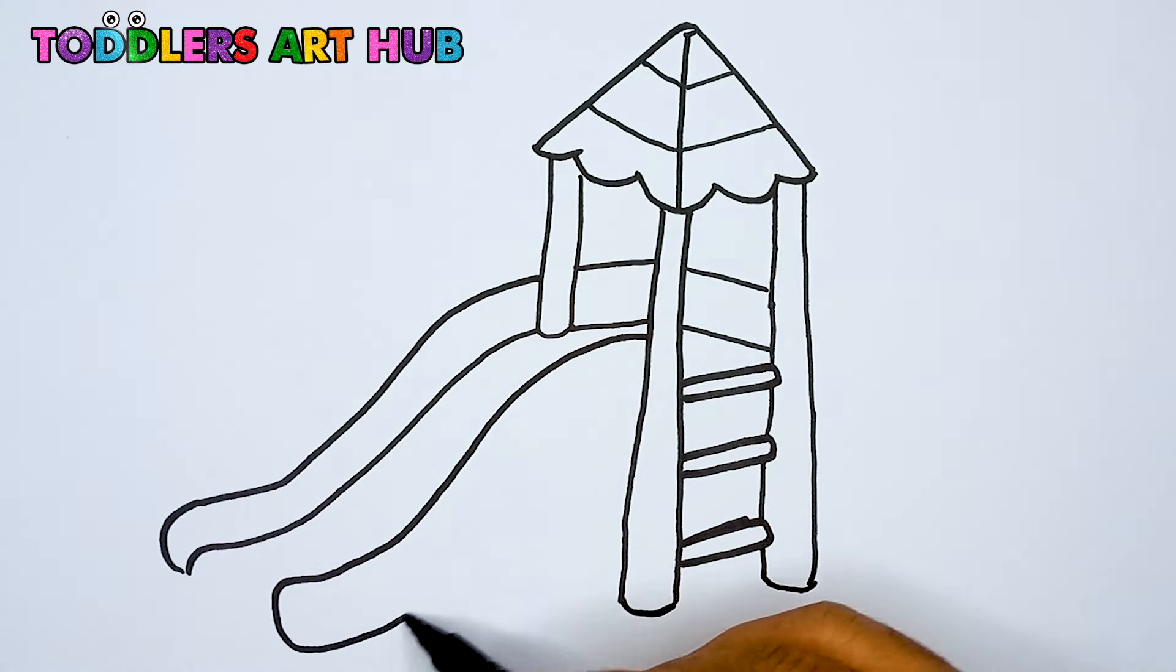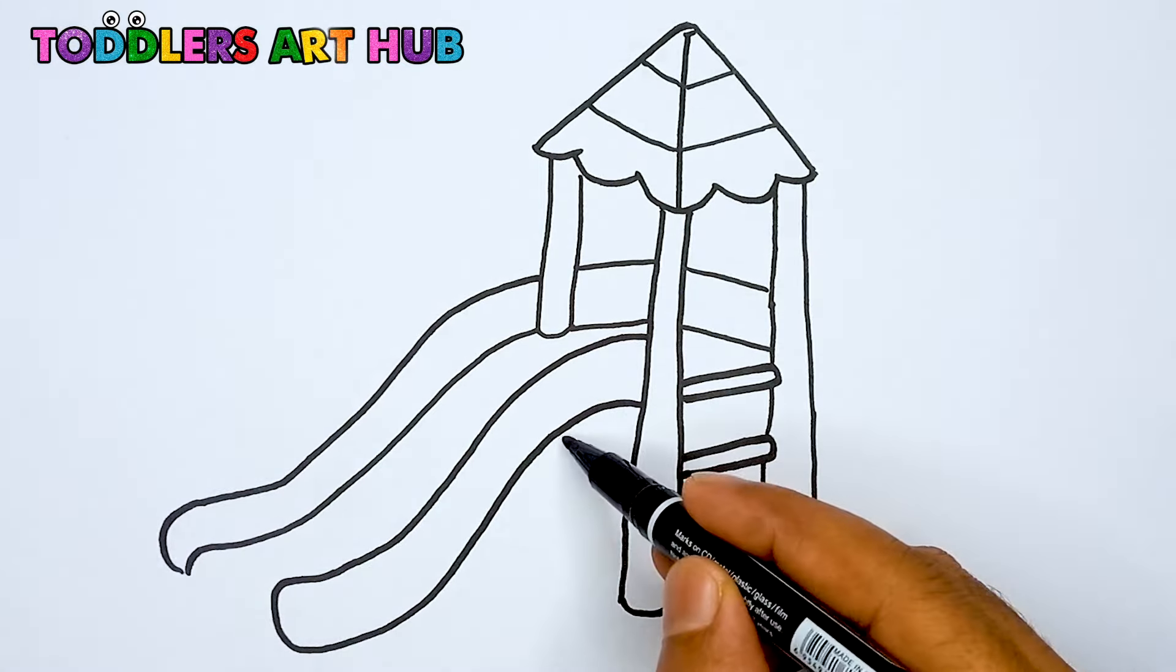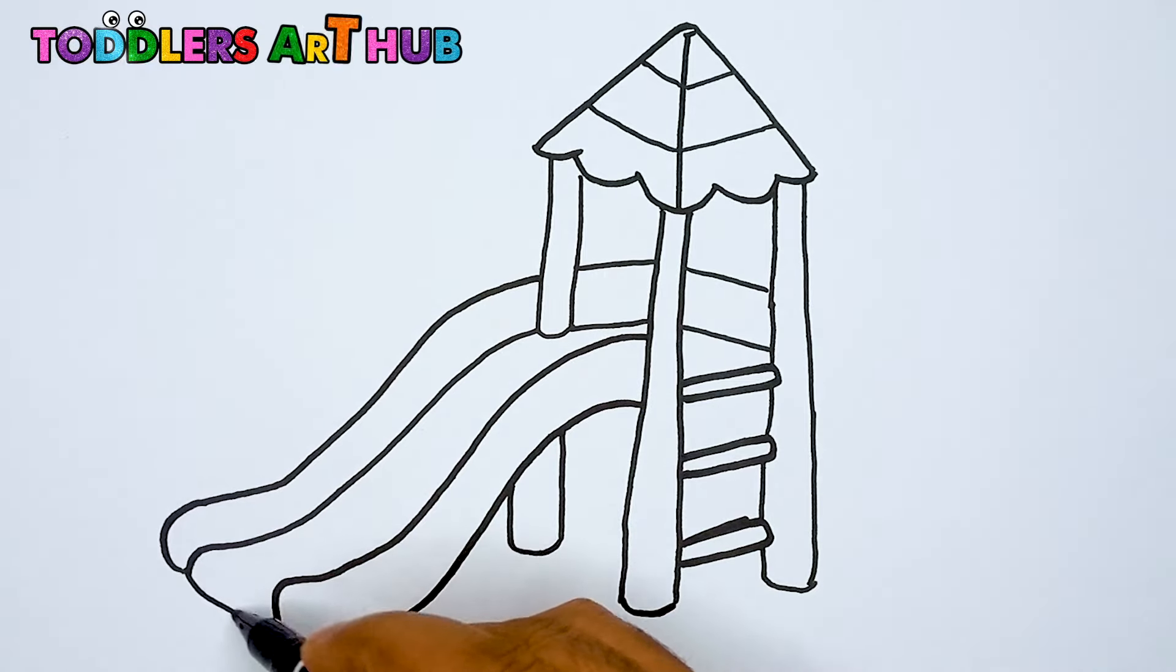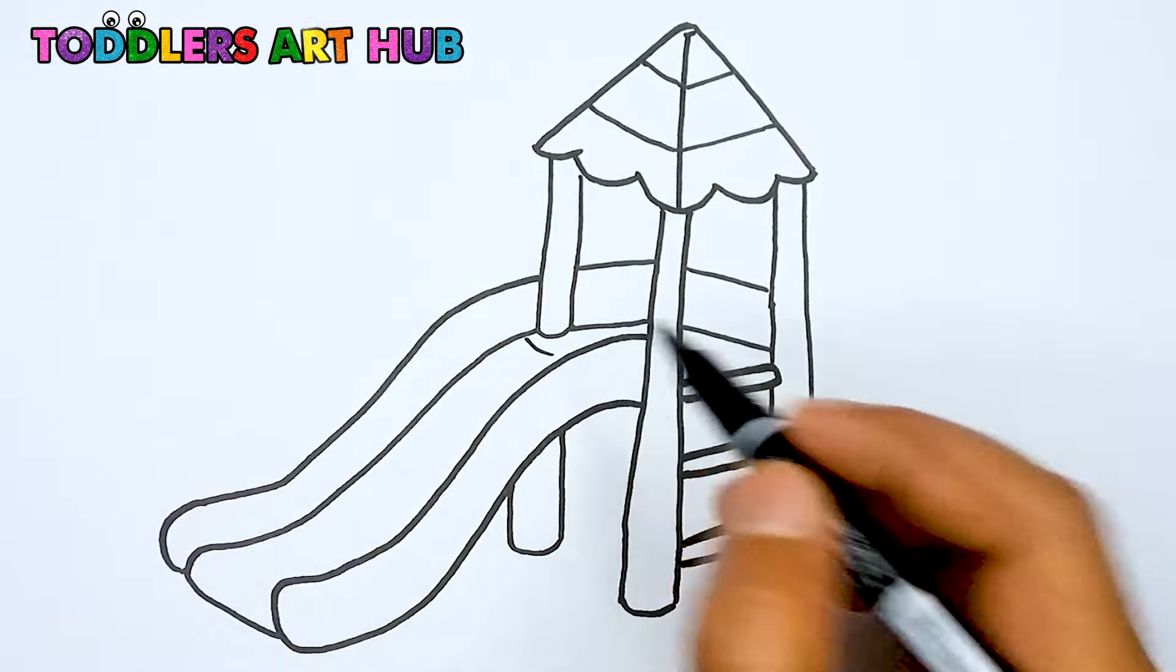Now, draw another line parallel to this one, starting from the pillar and ending at the same point as the first line. Connect the ends with a curve to complete the slide.